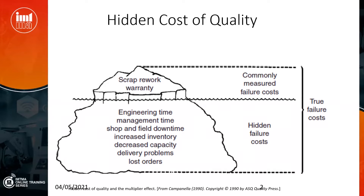There is management time if the rework, scrap, or warranty is high. On the shop floor, you spend time doing the rework or finding out what went wrong and trying to take corrective actions. On the field, if there is a warranty claim, then there is warranty downtime. If you have considerable scrap or rework, you tend to produce more than what you can actually sell, which means you have an increased inventory of things that you cannot sell.